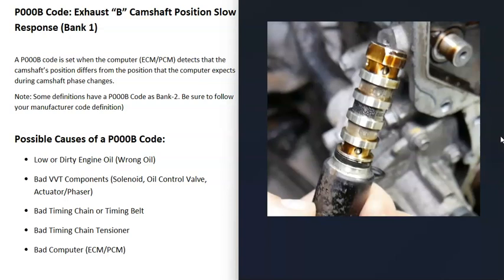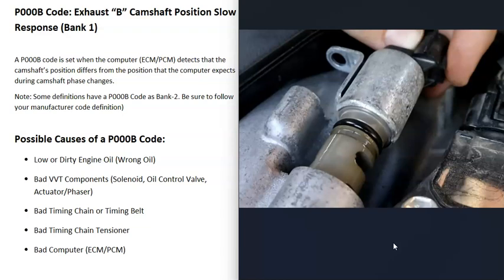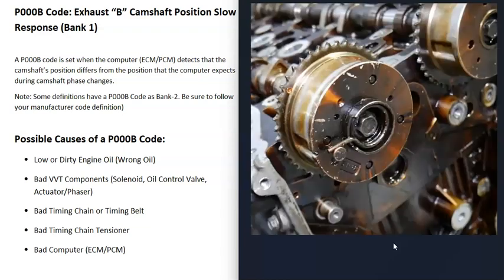The next thing that could cause this is bad components in the variable valve timing system — things like a bad variable valve timing solenoid, oil control valve, or phaser. Oil flows through all these components, which is why low or dirty engine oil can cause this code. These solenoids pull in and out, and depending on your engine — like a V6 or V8 — you're going to have multiple ones. There's also an actuator or phaser located at the top of the engine where the timing belt or timing chain rides, which can adjust timing and improve performance.